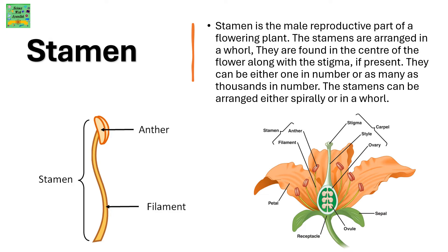The stamen is the male reproductive part of a flowering plant. The stamens are arranged in a whorl and are found in the center of the flower along with the stigma if present. They can be one in number or as many as thousands. The stamens can be arranged either spirally or in a whorl.